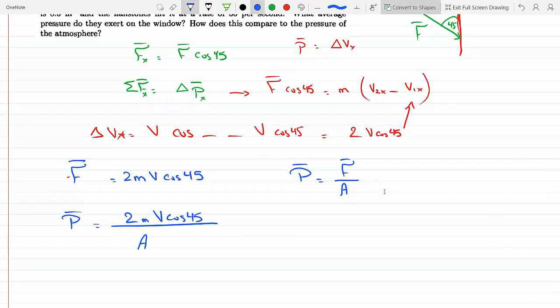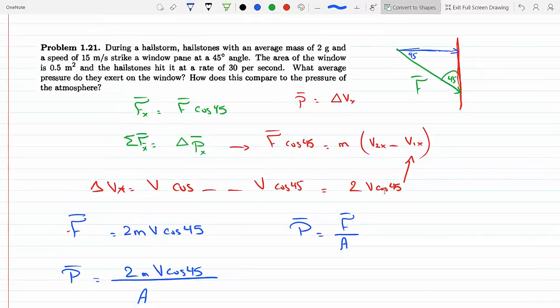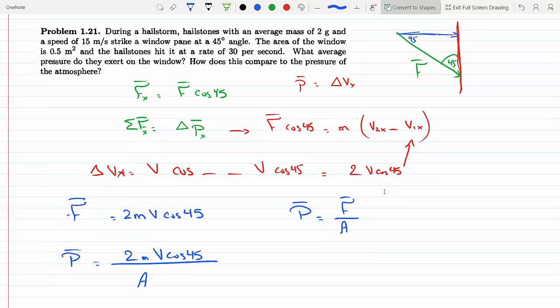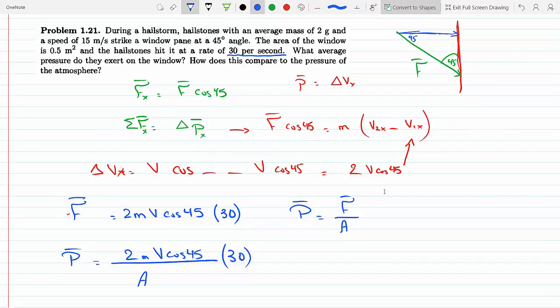Now one last thing to note here. This is the mass of one of them, but I do have 30 of them striking per second. So technically I would have to multiply the right-hand side of this equation by 30 per second. It's not just one molecule. Everything I've done was for just one hailstone hitting the window. For 30 of them, I just have to multiply that by 30.